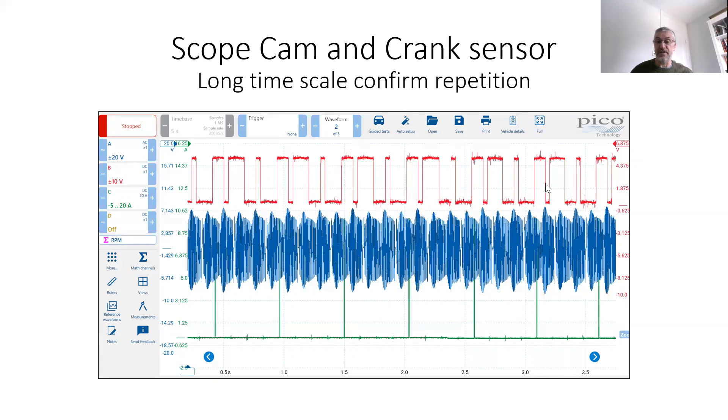You can see I've got a nice repetition of the cam sensor and the crank sensor. The green is my fuel injector. You can see the fuel injector is being operated, so that confirms the engine ECU is seeing everything it needs to operate that fuel injector, and it lines up correctly with the camshaft with good nice repetition.